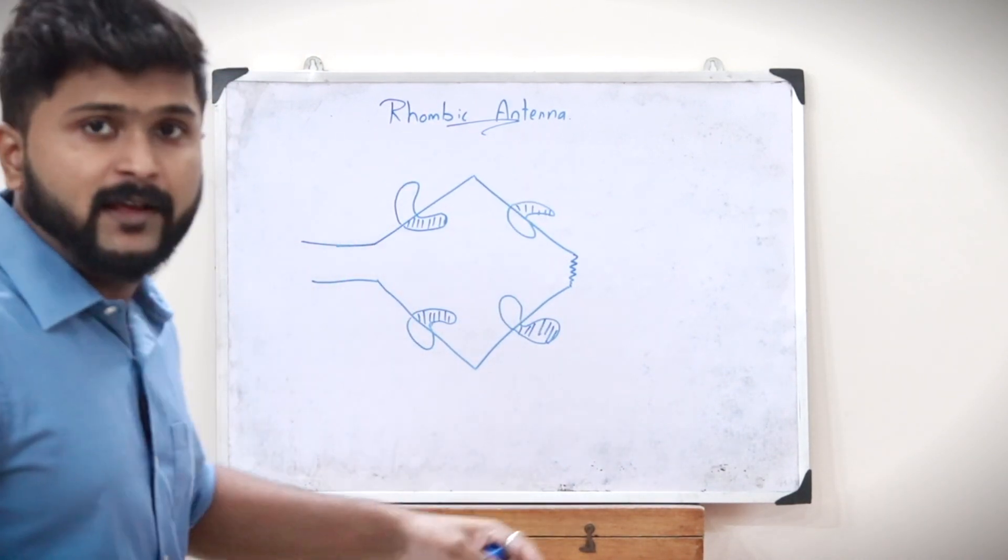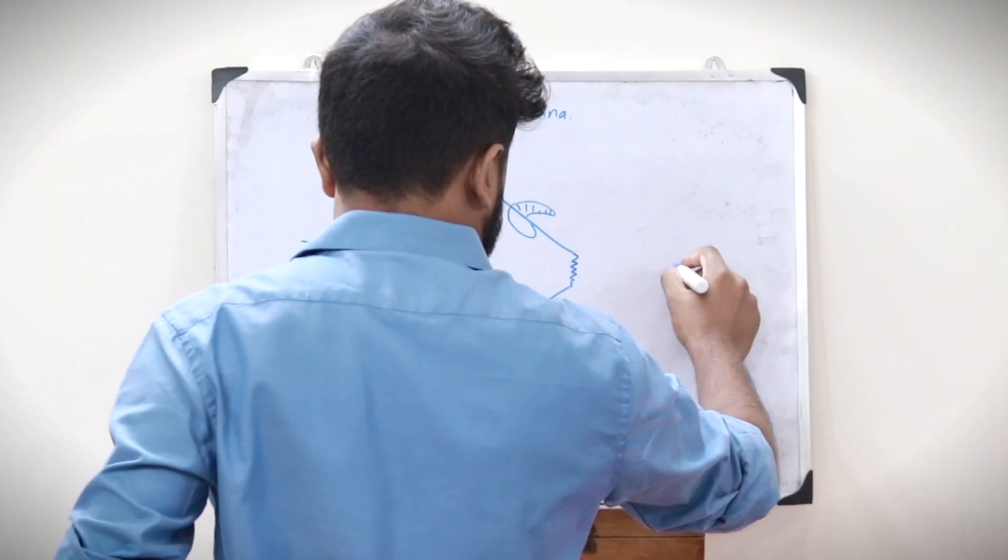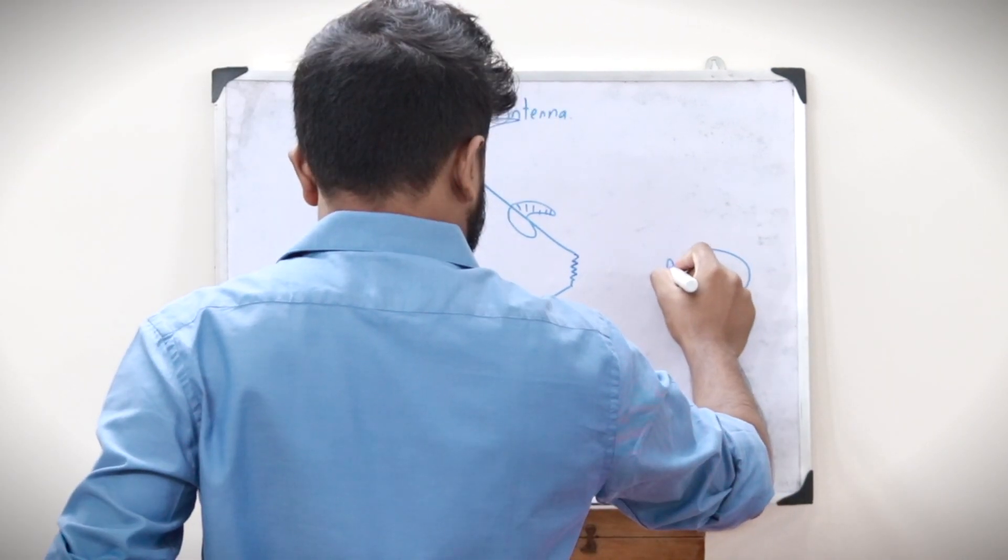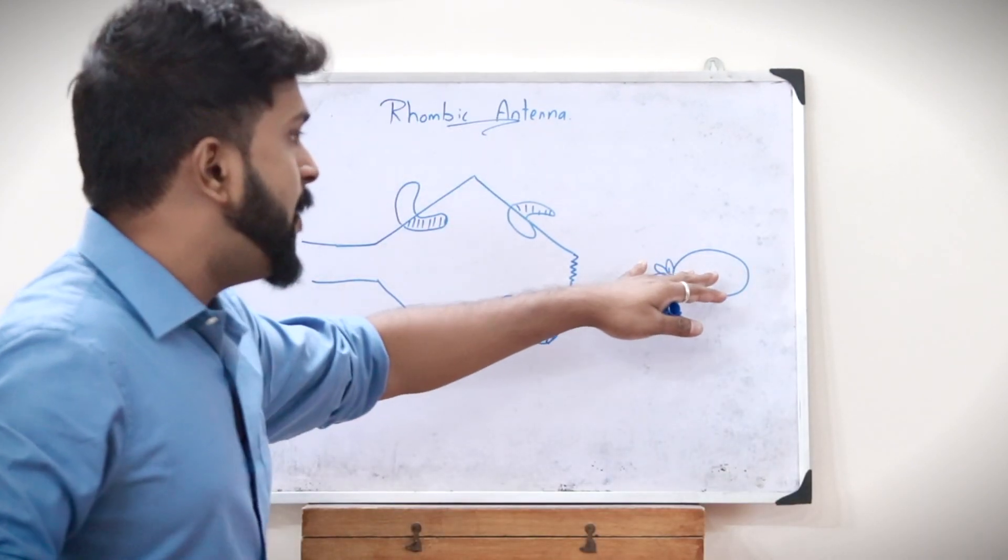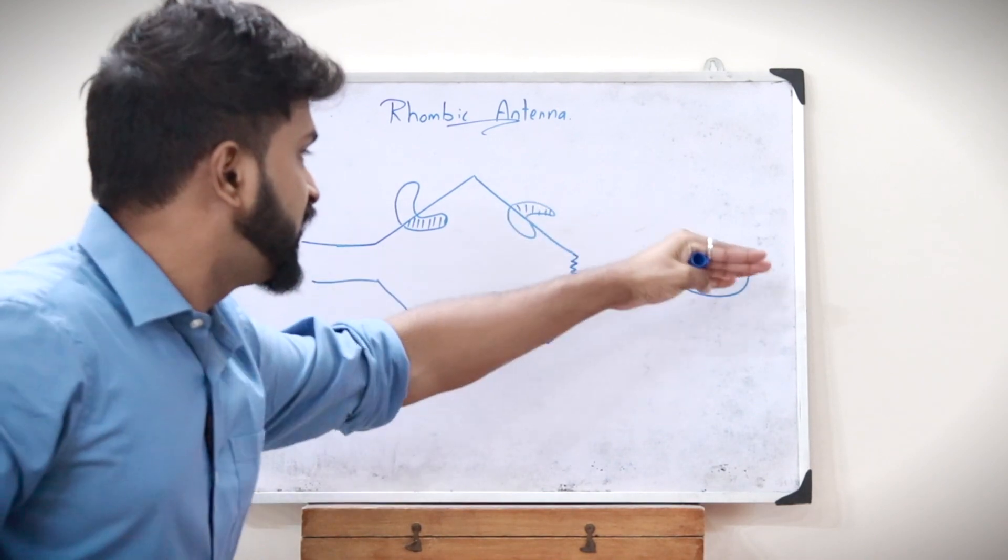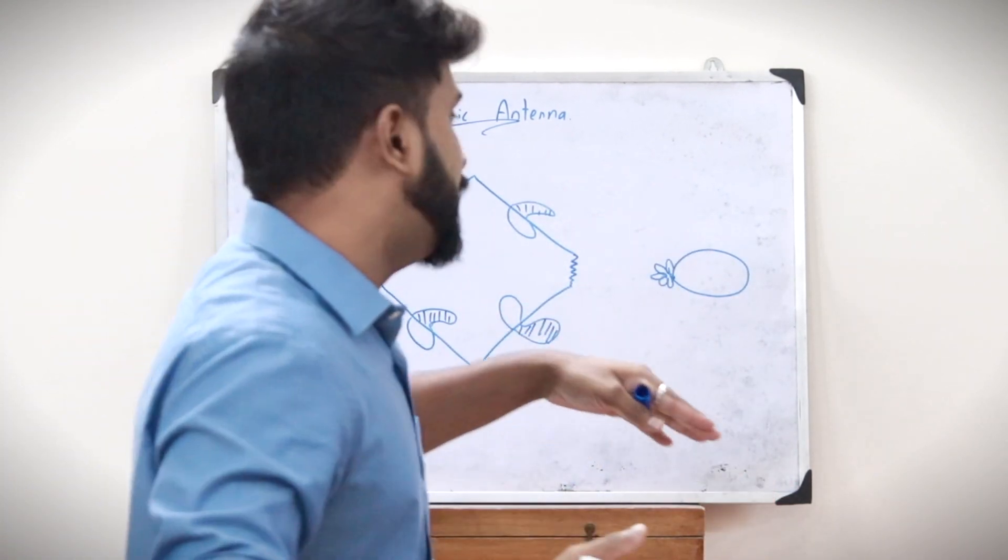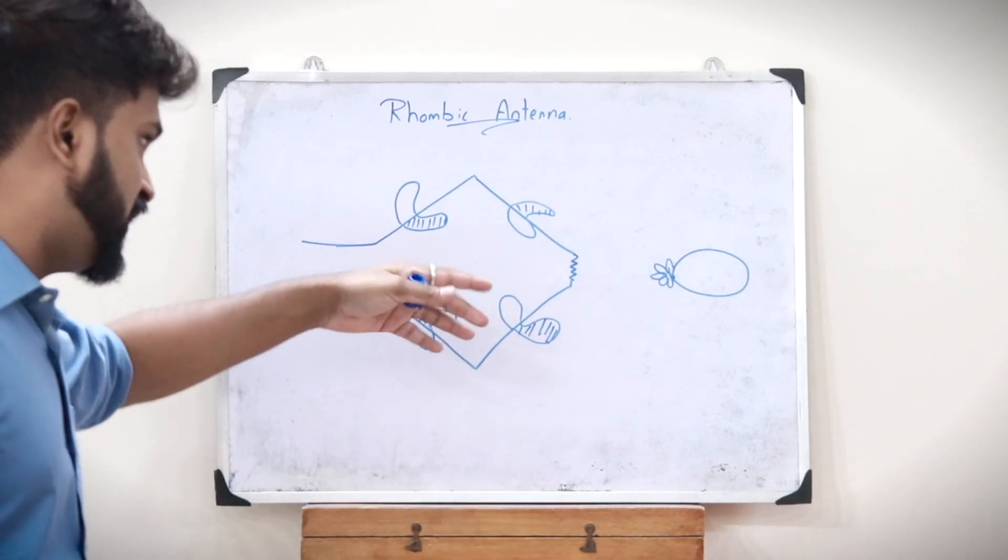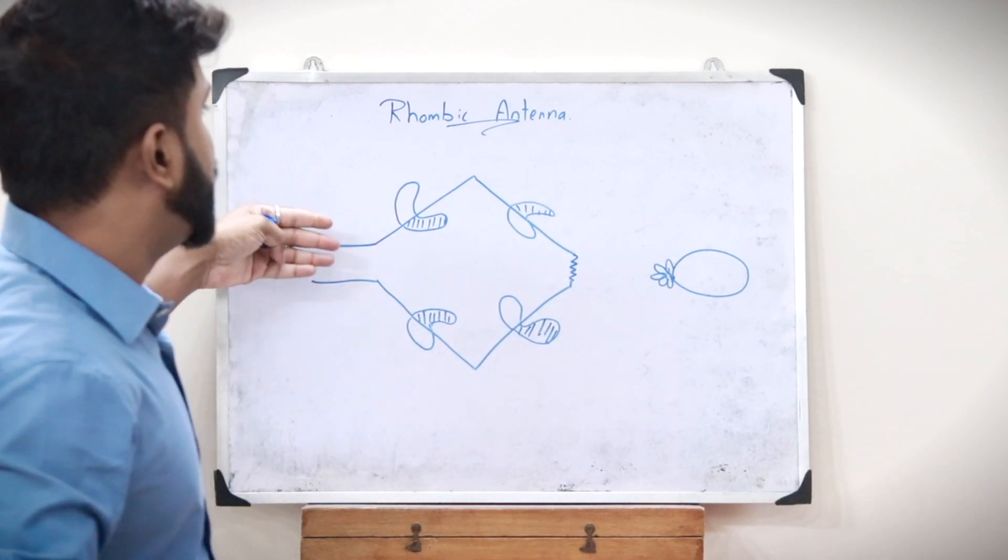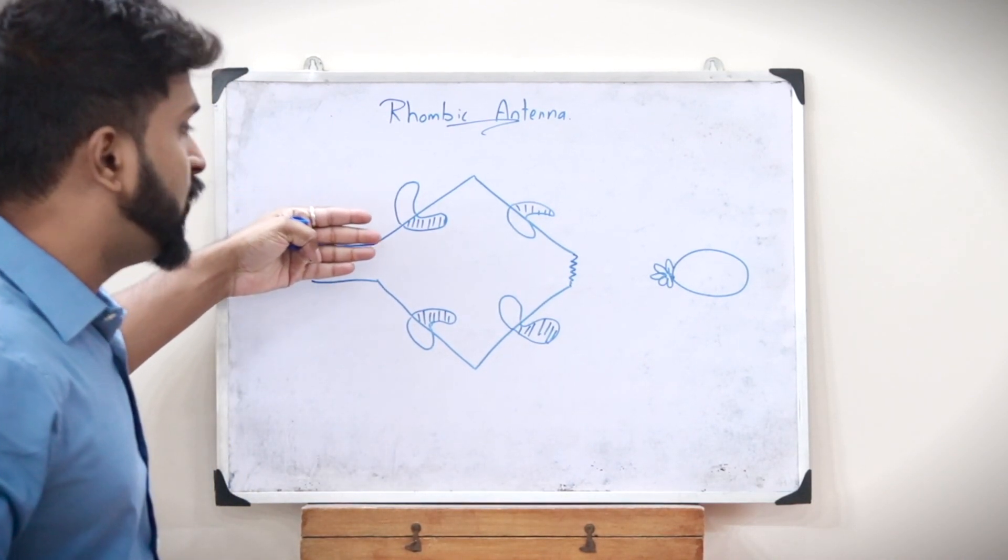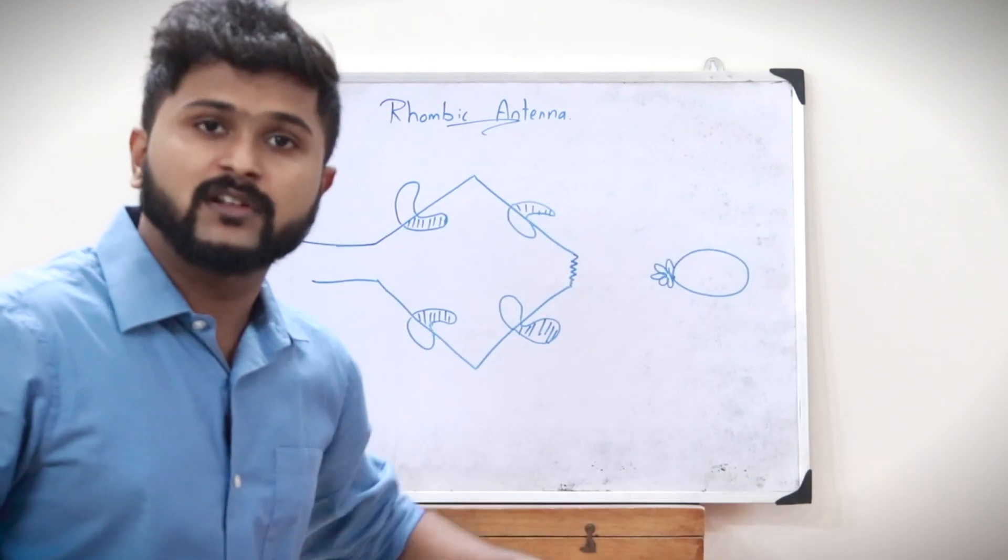If you are drawing the lobe diagram of this rhombic antenna, it would look somewhat like this. It would have a major lobe in this direction and certain side lobes or minor lobes in the direction in which it is not intended to propagate. From this we can observe that this rhombic antenna has a direction of propagation in this direction.